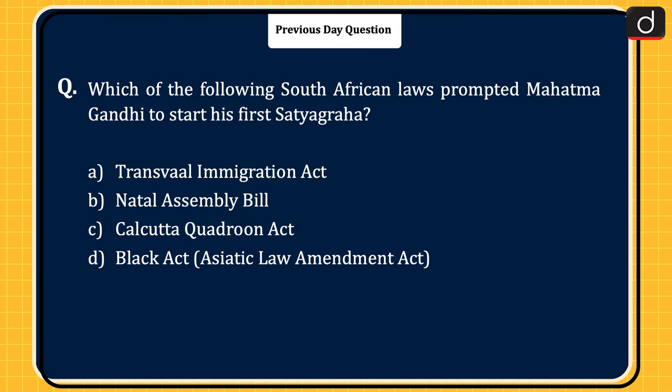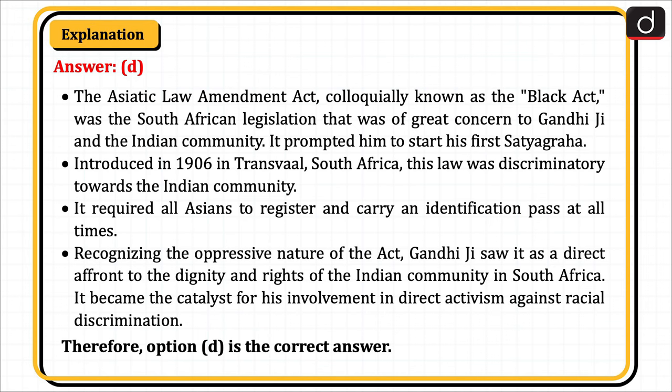The question was: which of the following South African laws prompted Mahatma Gandhi to start his first Satyagraha? Options were: Transvaal Immigration Act, Natal Assembly Bill, Calcutta Quadroon Act, or Black Act. The correct answer is option D, the Black Act, also known as the Asiatic Law Amendment Act. It was the South African legislation that was of great concern to Gandhiji and the Indian community, and it prompted him to start his first Satyagraha.